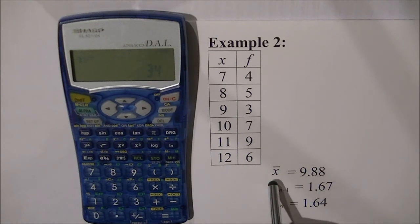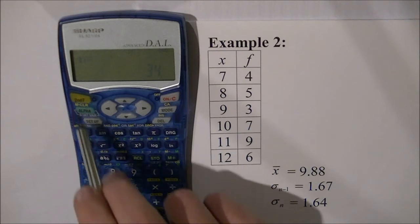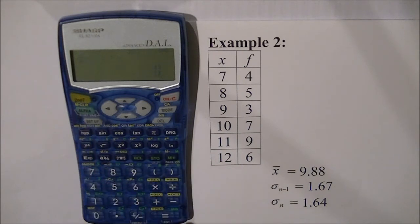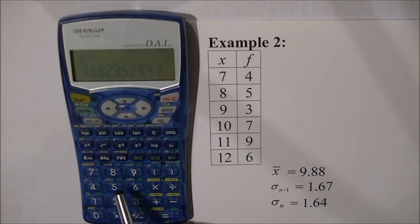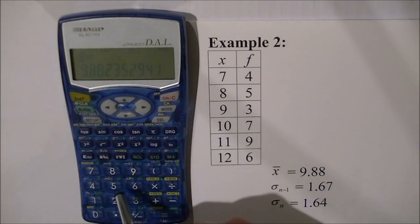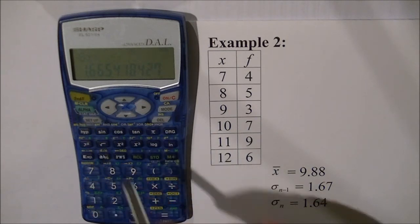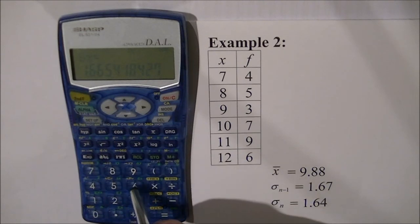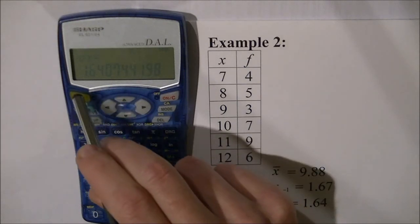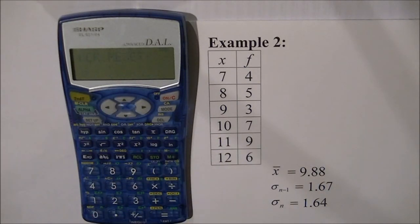So now what we're going to do is we're going to find the mean of these scores so remember that's above the four key alpha 4 equals 9.88, the sample standard deviation alpha 5 equals 1.67, and the population standard deviation alpha 6 equals and we get the answer 1.64. We'll clear the memory second F alpha 0 0 and we'll go back to normal mode mode 0 and our calculator's back ready for other work. Thank you.